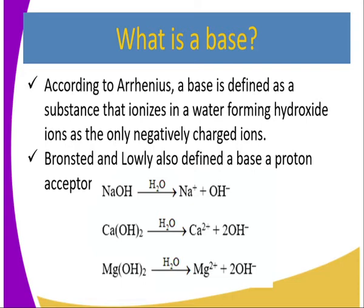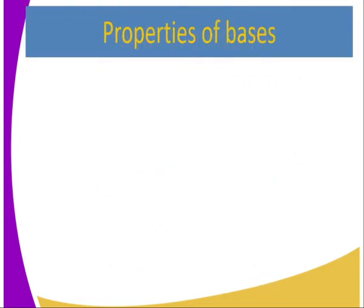Examples of bases include sodium hydroxide, which ionizes in water giving us sodium ions and hydroxide ions. We have calcium hydroxide giving us calcium ions and hydroxide ions. Magnesium hydroxide also dissociates in water to give us magnesium ions, which are positively charged, and hydroxide ions. In all these substances, the hydroxide ions determine the basic property of the substance.